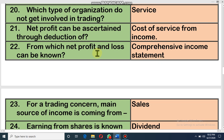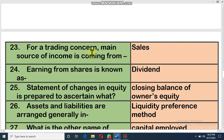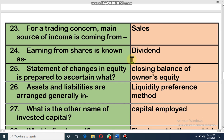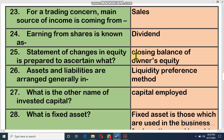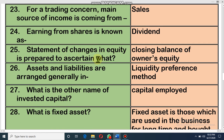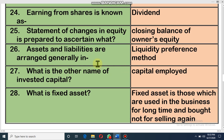From the comprehensive income statement we know the net profit or loss. For a trading concern, the main source of income is sales. Earning from shares is known as dividend — if we invest in a company's shares, the earning is called dividend. The statement of changes in equity is prepared to ascertain the closing balance of owner's equity. Assets and liabilities are arranged generally in liquidity preference method — that means first the most liquid asset, then investment, then fixed asset.